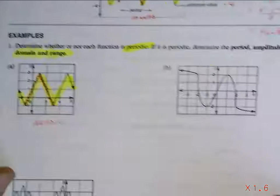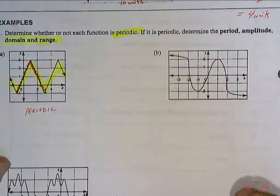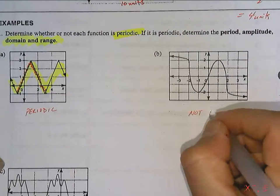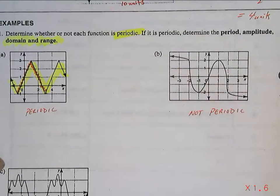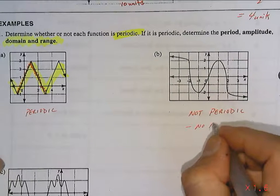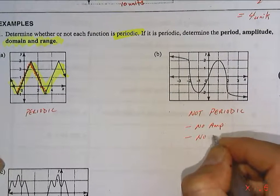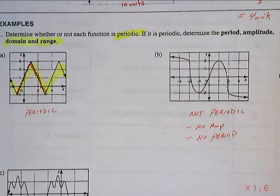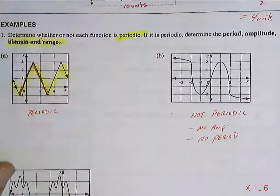Let's compare that to the one beside it. Do you think this is periodic? No. It's not periodic. So if it's not periodic, it's not going to have an amplitude. And if it's not periodic, it's not going to have a period. And domain and range, I don't really care for this sheet. In fact, I'm not going to find the domain and range for any of them right now.